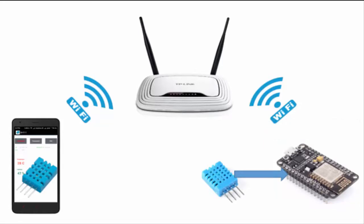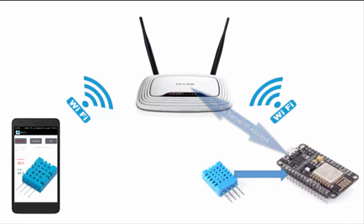The first requirement of this project is that the NodeMCU should connect with a Wi-Fi router. Then the Wi-Fi router assigns an IP address to the NodeMCU module, which is the server address for this NodeMCU module.